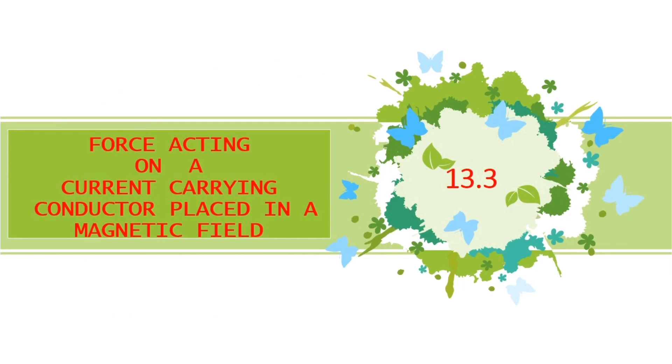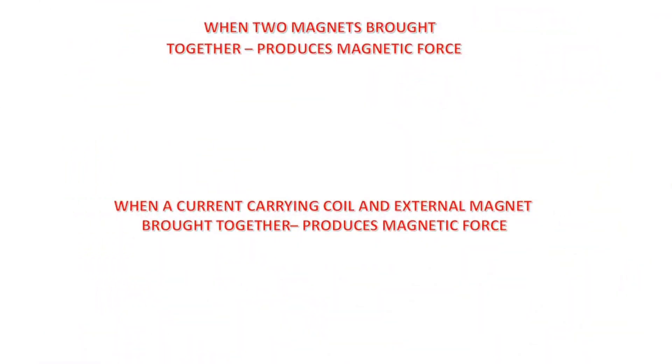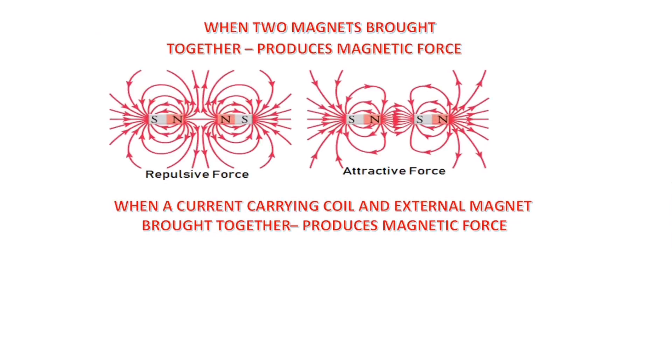Before entering into this particular topic, I would like to ask you a question. What happens when two magnets are brought together? Yes, when two magnets are brought together, it produces a magnetic force, either an attractive force or a repulsive force. Like poles repel each other and unlike poles attract each other. When two magnets are brought together, it will produce a magnetic force.